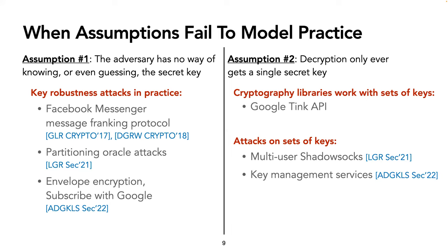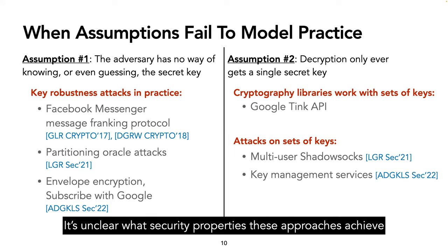Moreover, when we look at the assumption that decryption only ever gets a single secret key, we see this also does not model practice. For instance, the Google Tink API gives decryption a set of keys and requires decryption to first determine which key is the correct one before decrypting. Furthermore, we've seen systems in practice in which decryption must choose from a set of keys, and does this insecurely. In particular, we previously showed this as an issue with multi-user Shadowsocks, and also Albertini et al. showed this as an issue with key management services. Altogether, while in practice we've seen various techniques for key identification during decryption, it's unclear what security properties some of these approaches achieve. To date, there has been no formal investigation of their security properties or efficacy, especially in the presence of adversarial keys. The ad hoc solutions for identifying the intended key deployed in practice can be inefficient, and as we've seen in some cases, vulnerable to practical attacks.